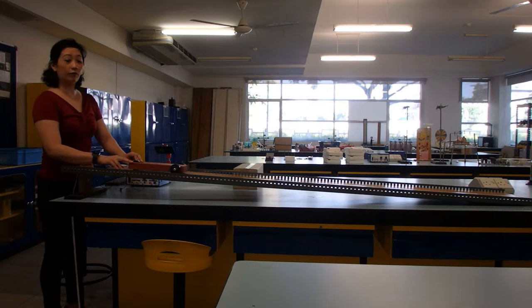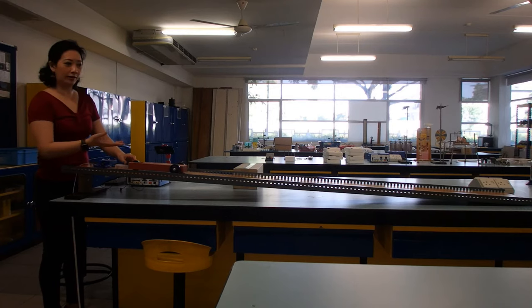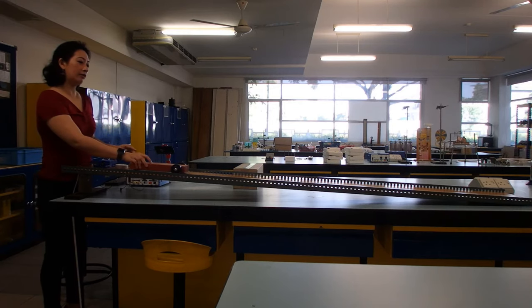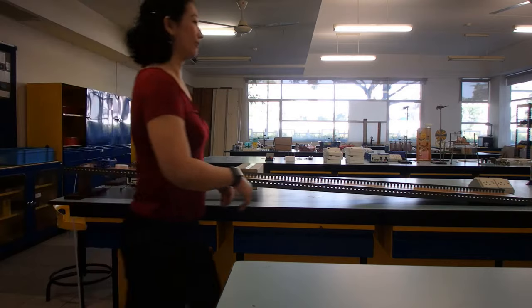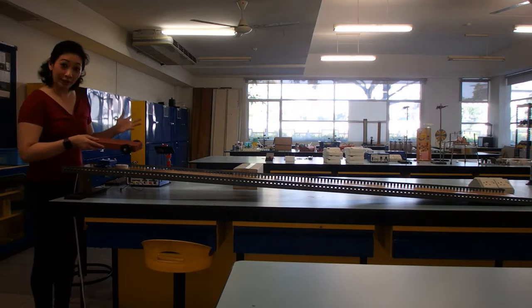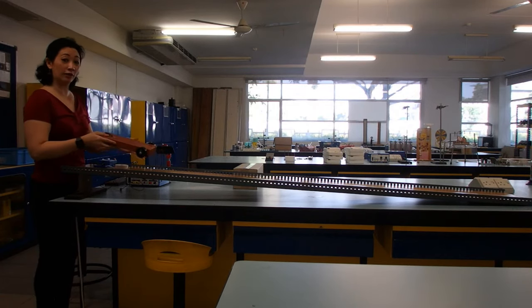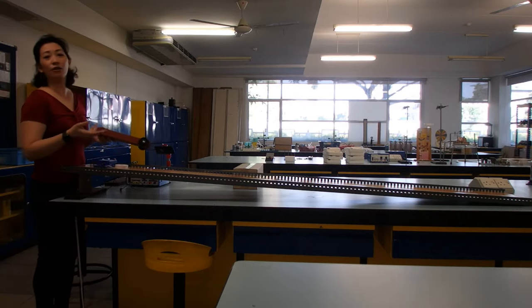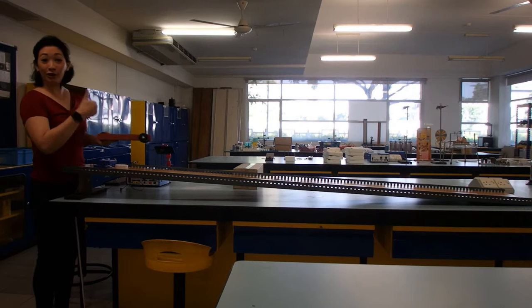Before we get started with the experiment, we first need to check, does our trolley roll down the ramp easily? Because if it's not able to move, then there's no point doing the experiment. Let's check. So, it works. For the perfect experiment, if possible, we would like the trolley to be able to move all the way down without hitting the sides of the ramp. But we can't have everything perfect and there's always going to be some errors in our experiment. As long as the trolley is able to move down the ramp, we're good to go.